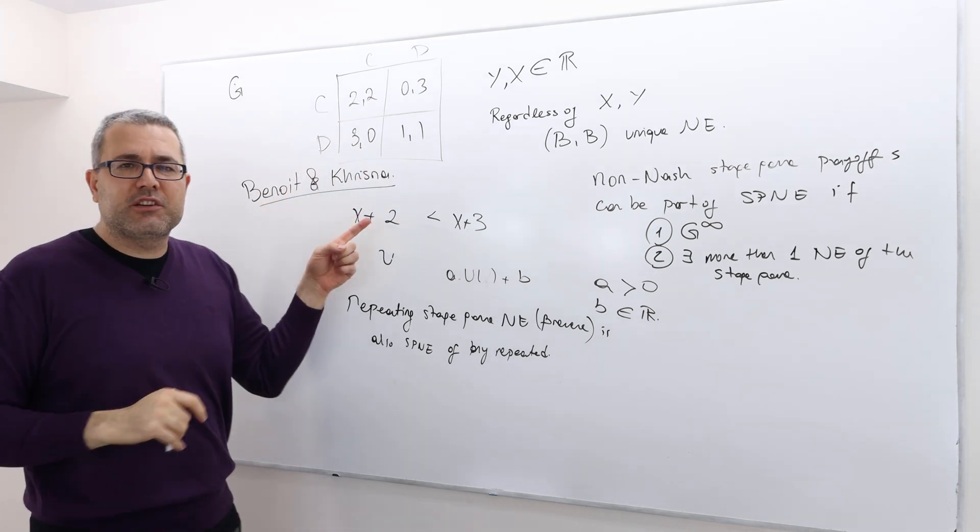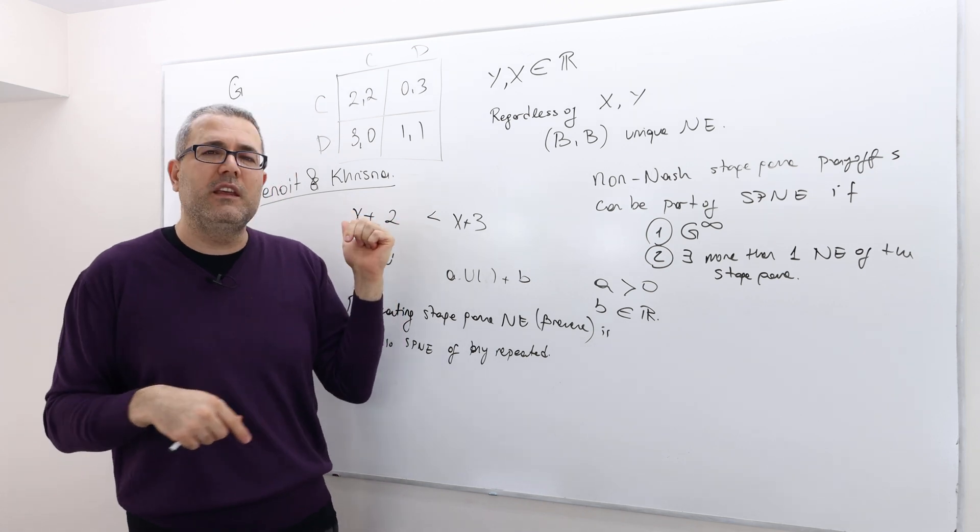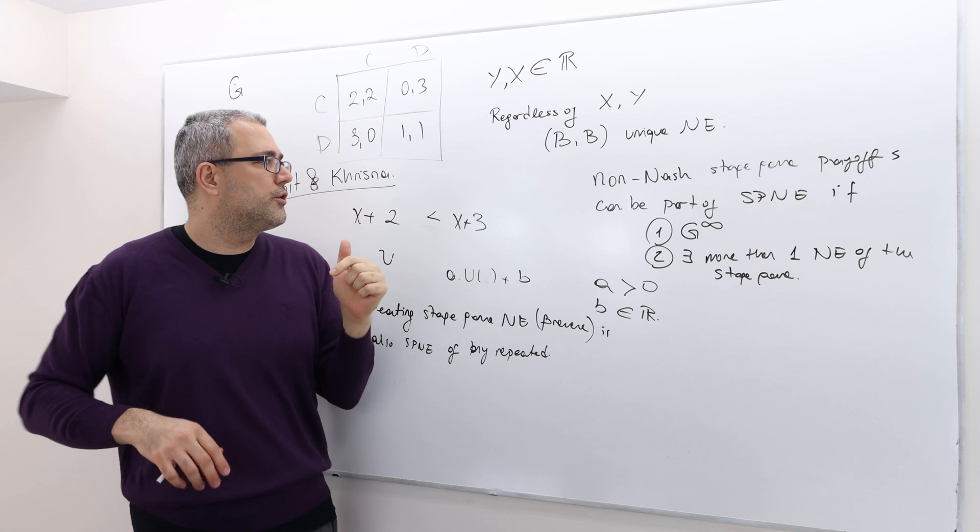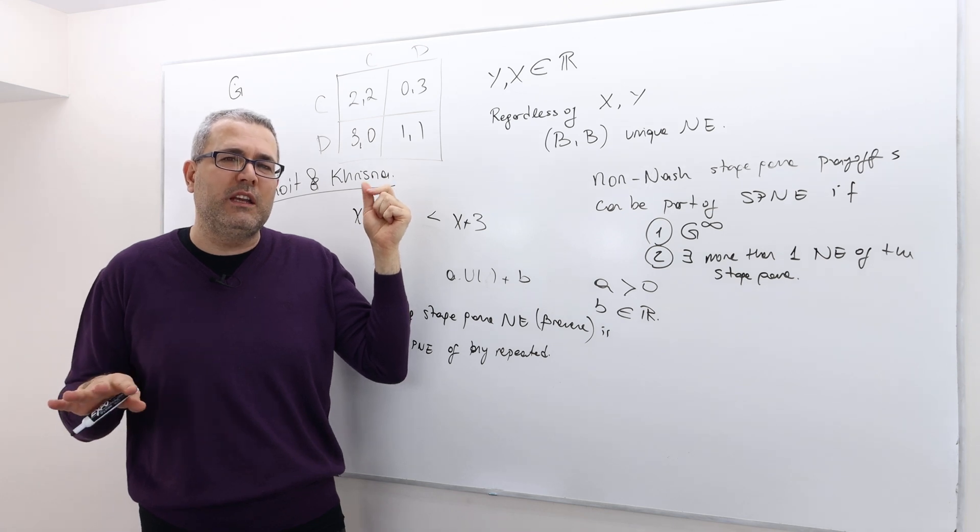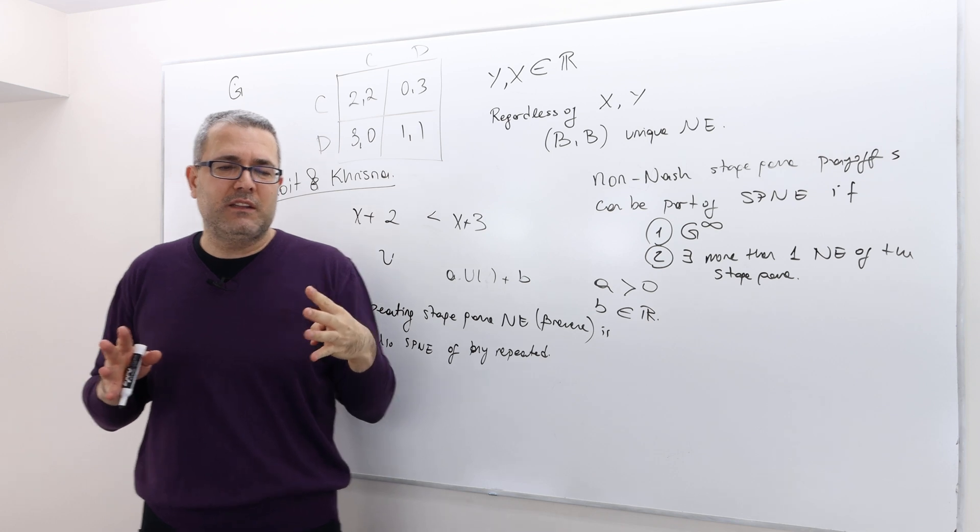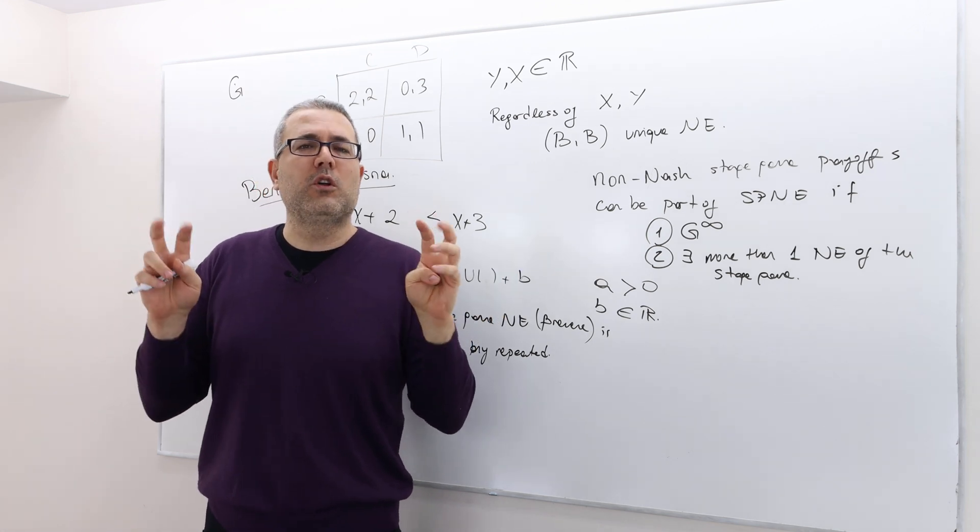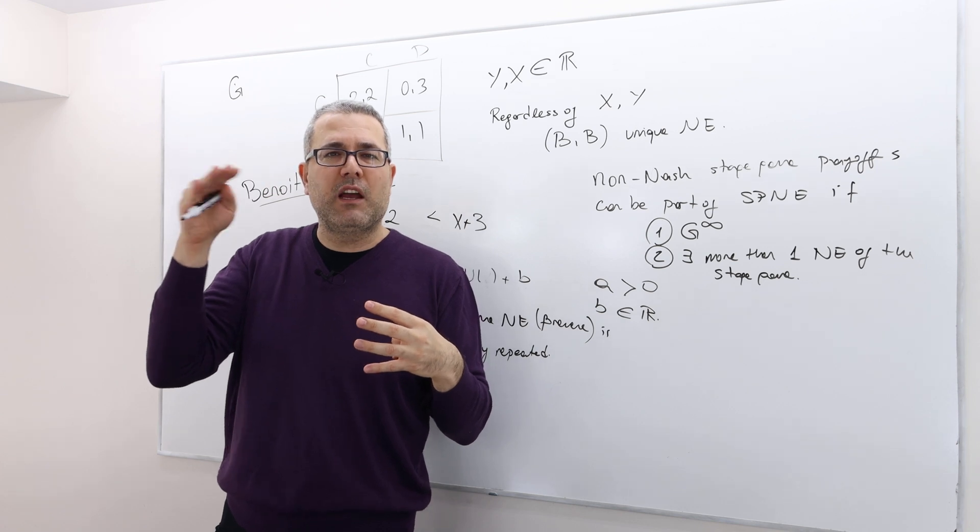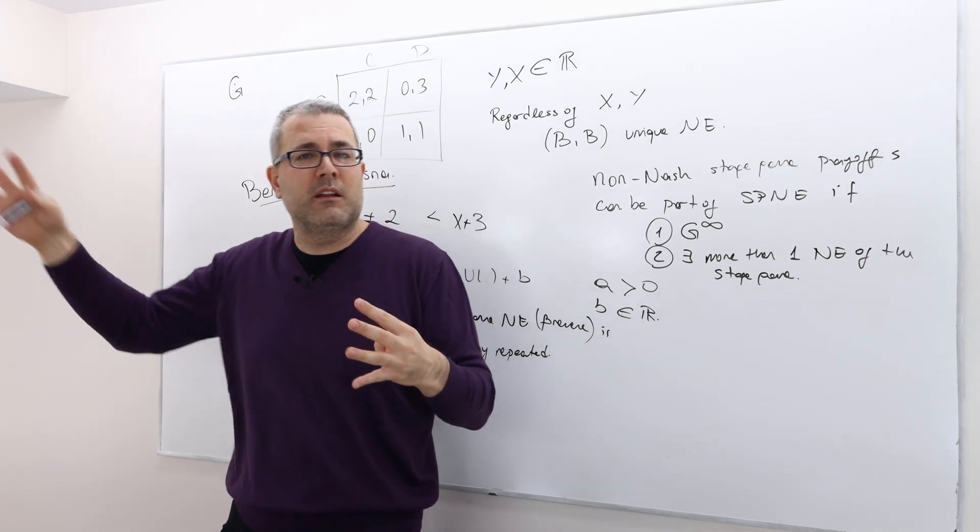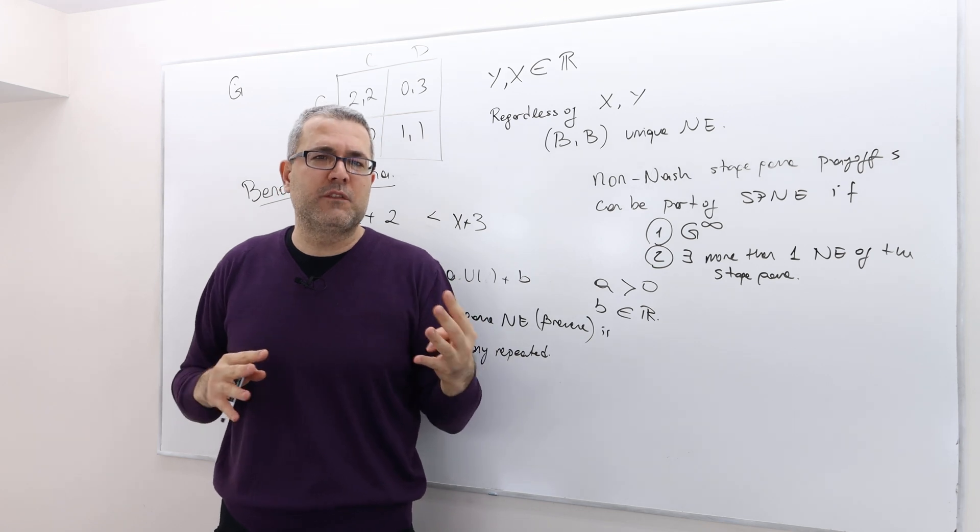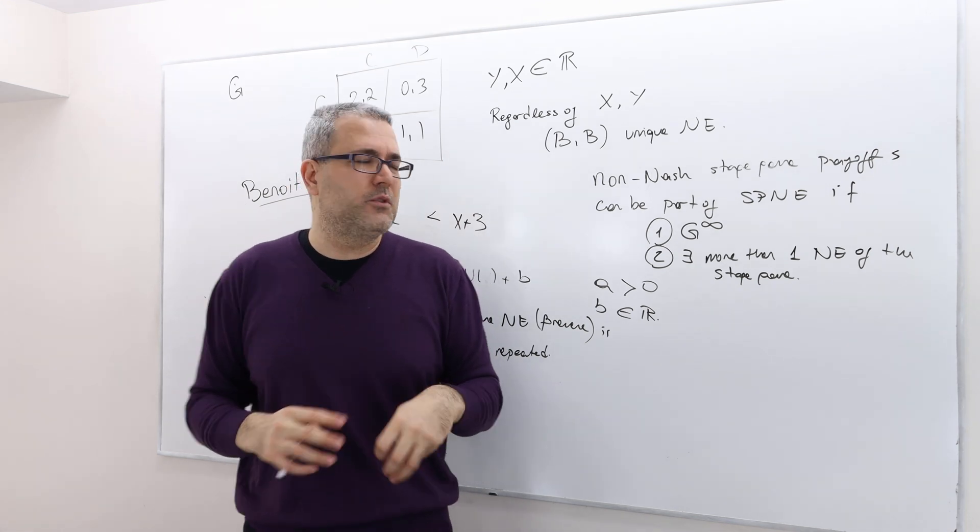Benoit and Krishna - V.J. Krishna is a professor at Penn State University - have a paper published around the end of the 80s or early 90s. They show that any finite horizon repeated game with more than one Nash equilibrium, they prove a folk-like theorem. If they take this finite horizon T to infinity - if T is large enough but not infinity exactly, but very large - they can approximate almost all payoffs. But they need at least two Nash equilibria.